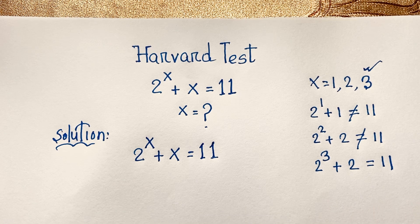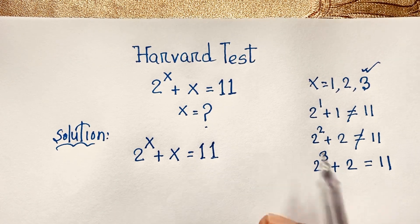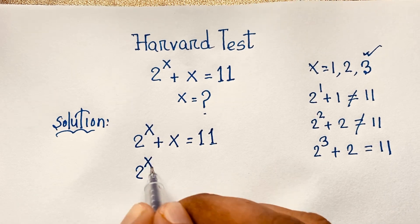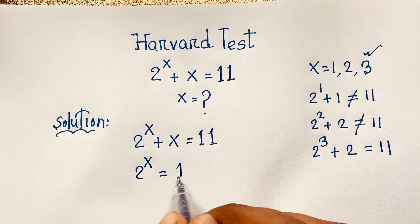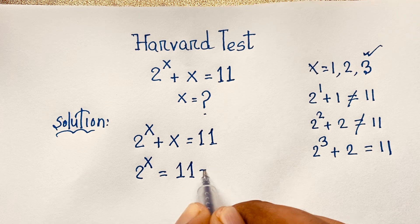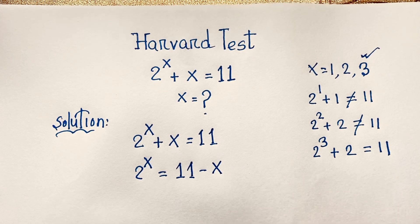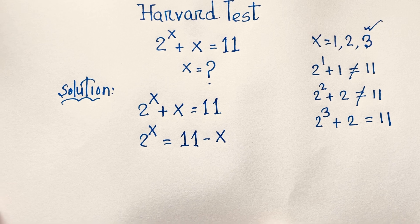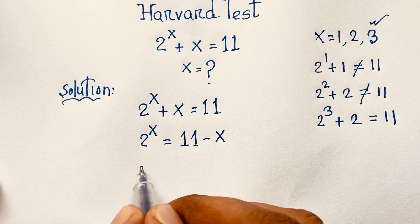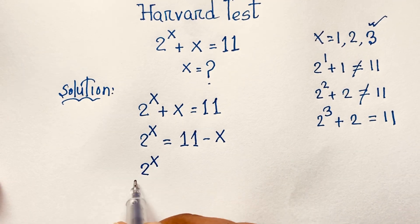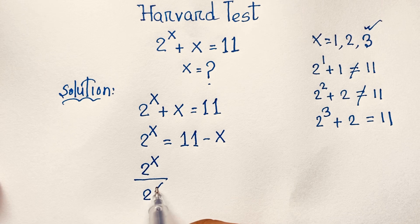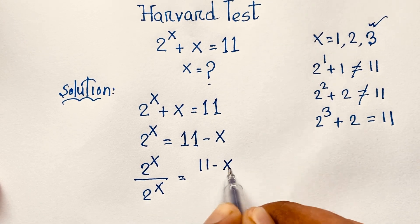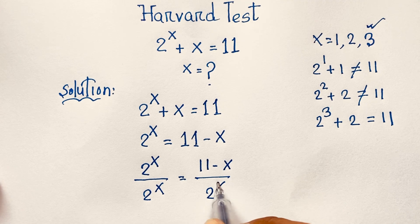Now I move the x to the other side, making it negative x. So we get 2 to the power of x is equal to 11 minus x. Then I divide both sides by 2 to the power of x, giving us 2^x over 2^x equals (11 minus x) over 2^x.